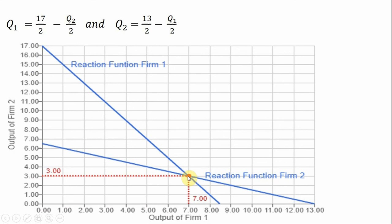You'll notice where these two reaction functions intersect, we found our Cournot-Nash equilibrium, where Firm 1 produces 7 units of output and Firm 2 produces 3 units of output. Okay, I hope you found this video helpful.